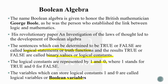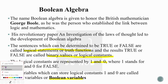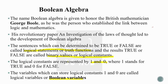The variables which can store logical constants one and zero are called logical variables or boolean variables. For example, if we write A equals true — true means one — then A equals one. Here, one is our logical constant and A is our boolean variable. The variables used to store logical constants are known as boolean variables.